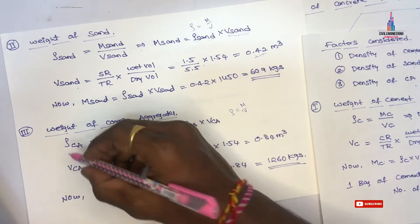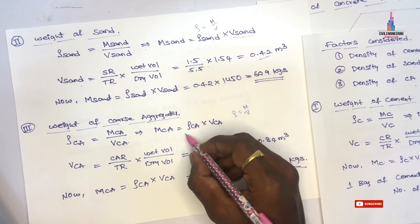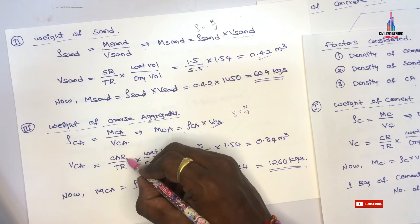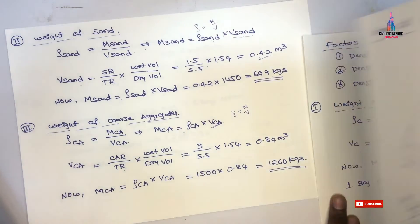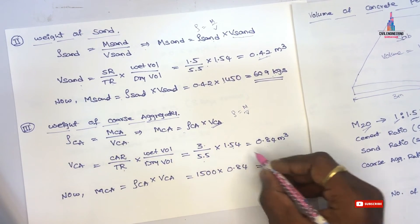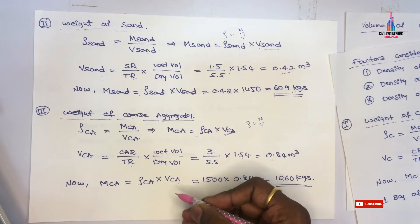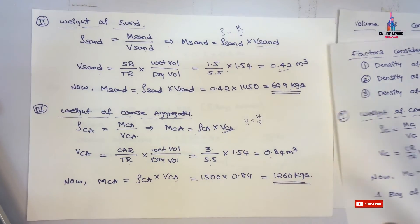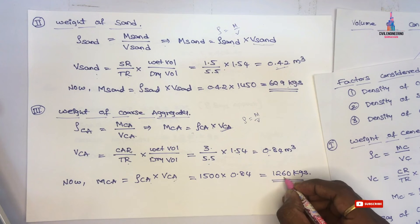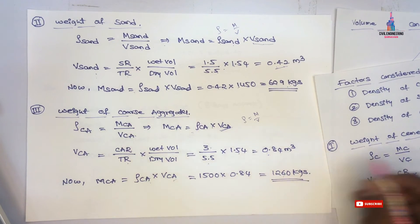For coarse aggregate, applying the same formula: mass of coarse aggregate equals density of coarse aggregate multiplied by volume of coarse aggregate. Volume of coarse aggregate equals coarse aggregate ratio divided by total ratio, multiplied by 1.54. From M20 concrete, coarse aggregate ratio is 3, so volume equals 3 divided by 5.5 multiplied by 1.54, giving 0.84 cubic meters. Mass equals 1500 multiplied by 0.84, which equals 1260 kg of coarse aggregate.